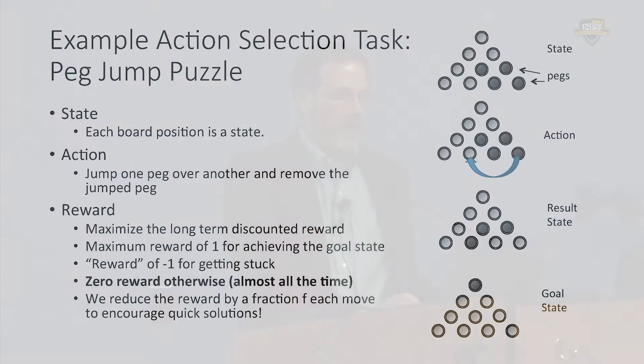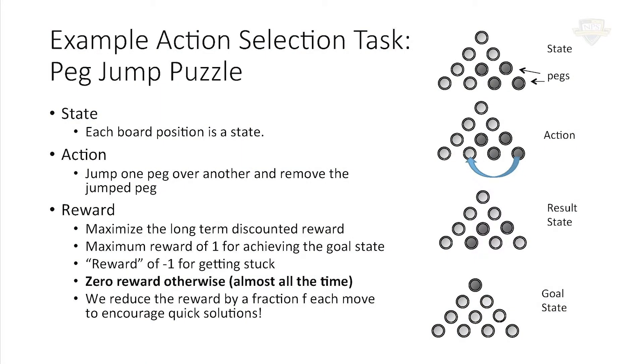For example, you can move this peg to here, taking the peg in the middle out. To make this an action selection problem, we need to specify a reward structure — what kind of actions do we actually want? The goal is for the system to try to maximize long-term discounted reward.